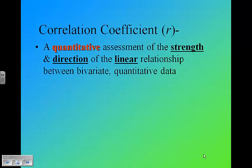Now, the correlation coefficient. It is a quantitative assessment of the strength and the direction of the linear relationship between bivariate, meaning two, quantitative, meaning numerical, data. We talked about this, this definition came earlier.